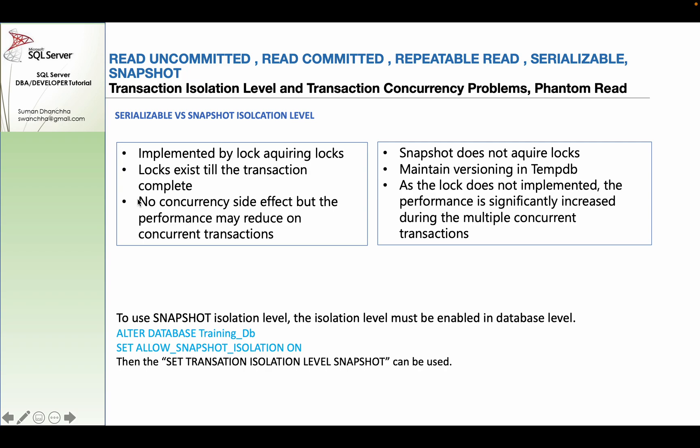If you have multiple transactions, you can read the data and use the transaction. Now, we have to mention that we need to enable snapshot isolation at the database level. What is the meaning of enabling at the database level?